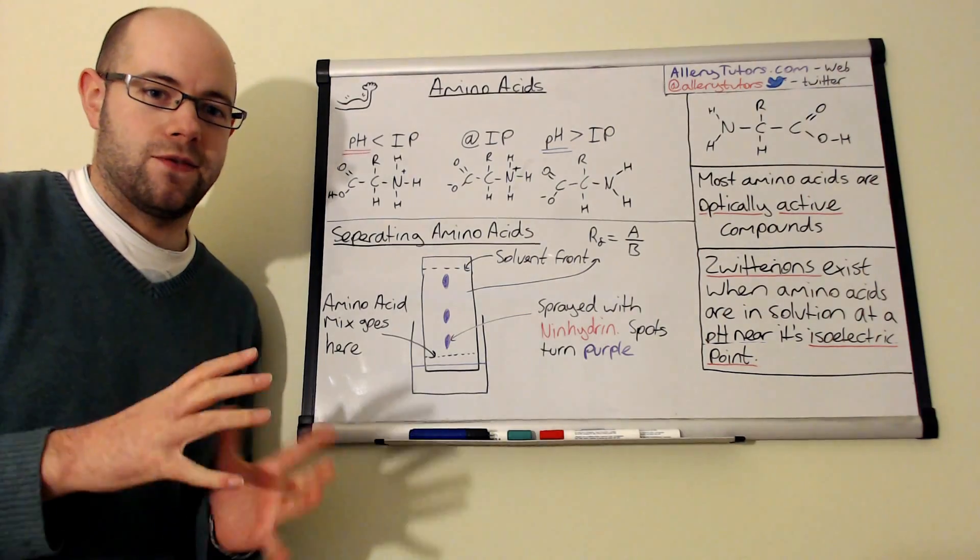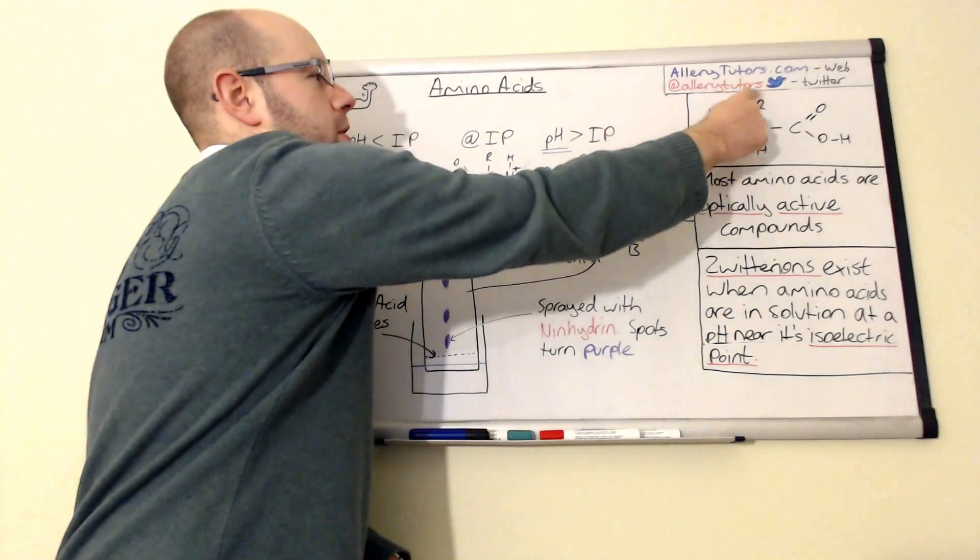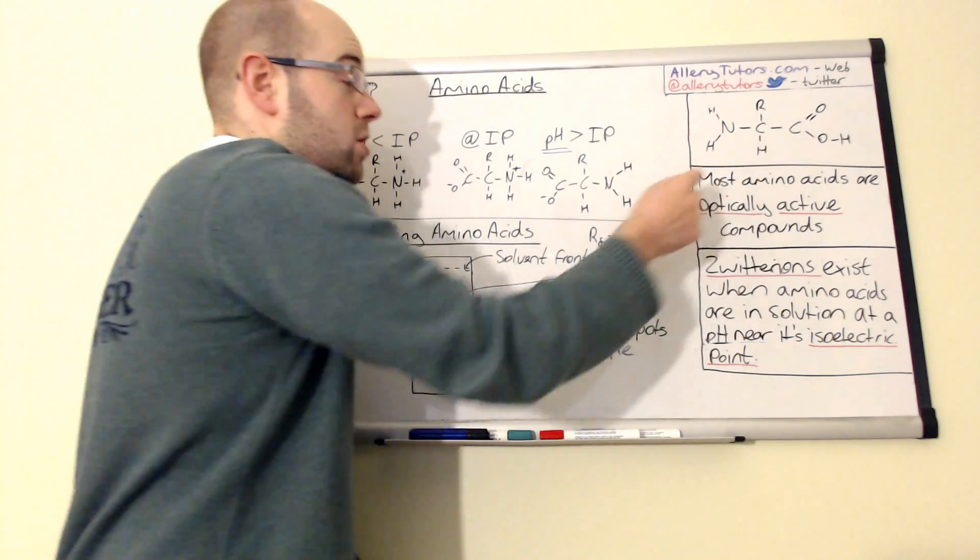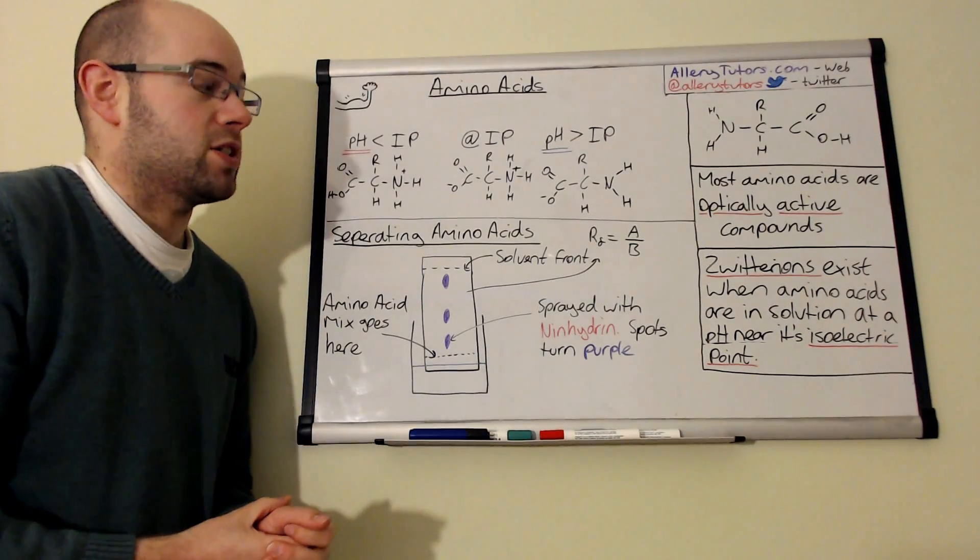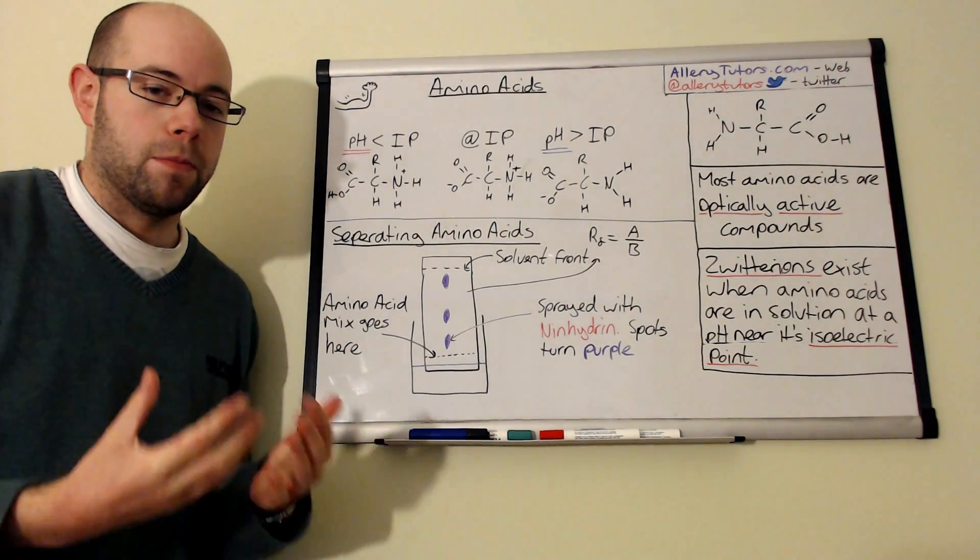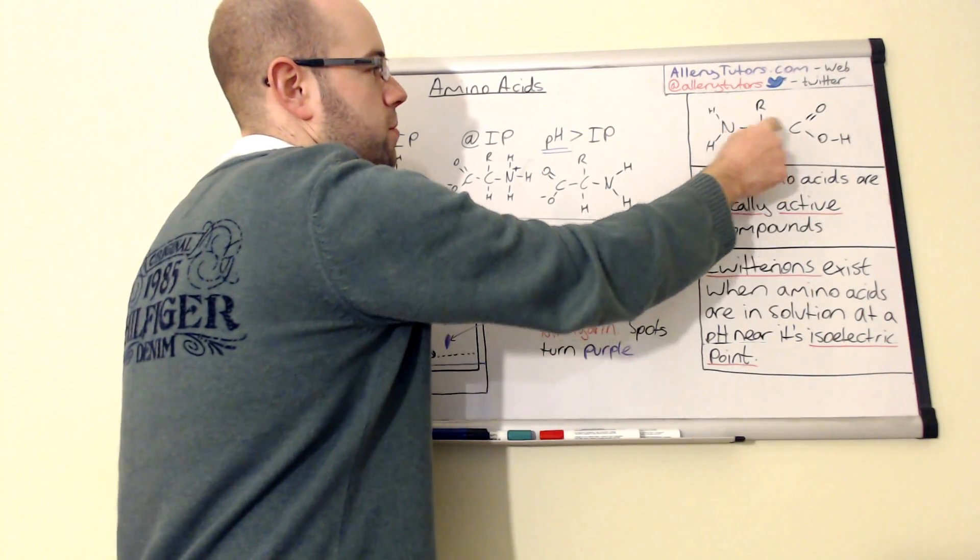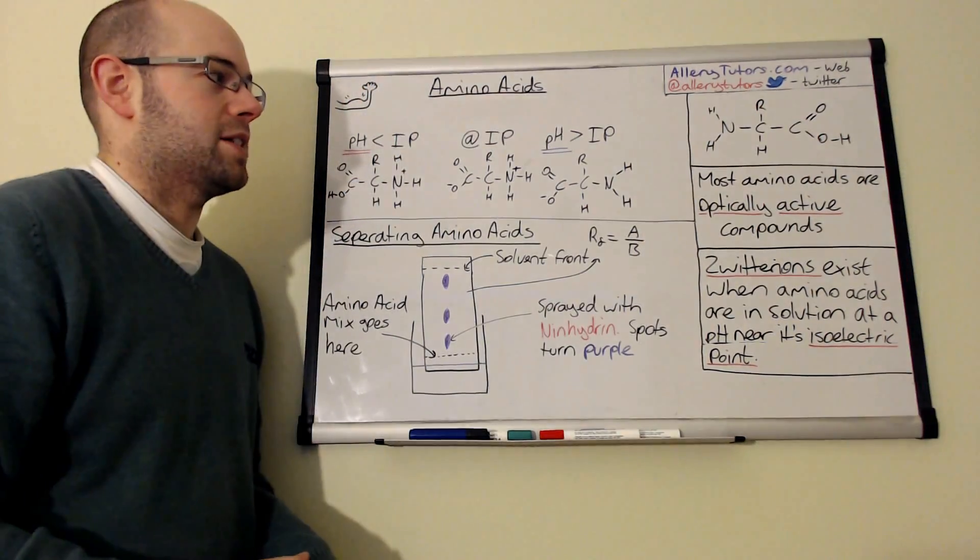Now amino acids can come in different types and that's why we've got this R group up here. And you can see that we have in most amino acids, we actually have an optically active molecule. So we have a chiral center and we know that because we actually have four different groups around the same carbon atom.